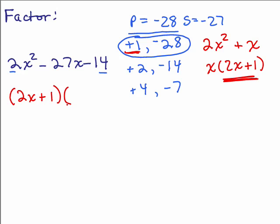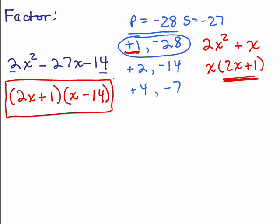Alright, so what's the other factor? Well 2x times what will give me 2x squared? x and 1 times what will give me negative 14, negative 14 and that should be the correct factorization and you should check by going ahead and doing the FOIL method, making sure that gives you the correct inner and outer term, which it does.